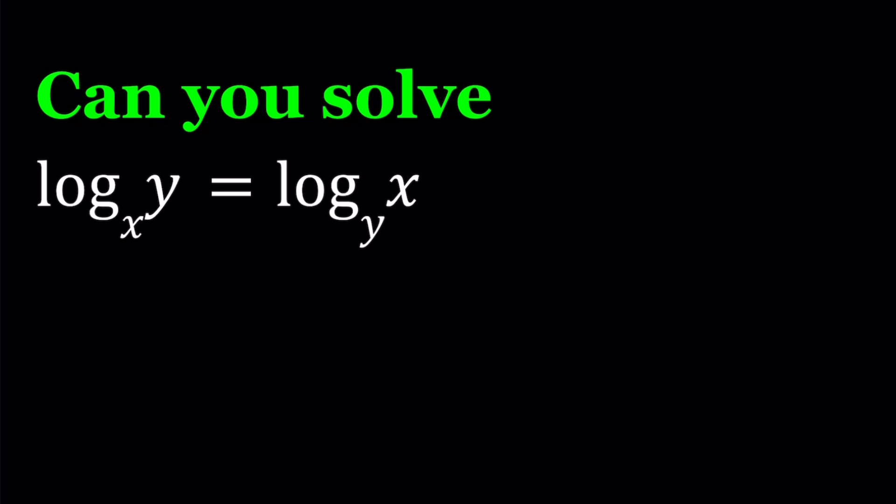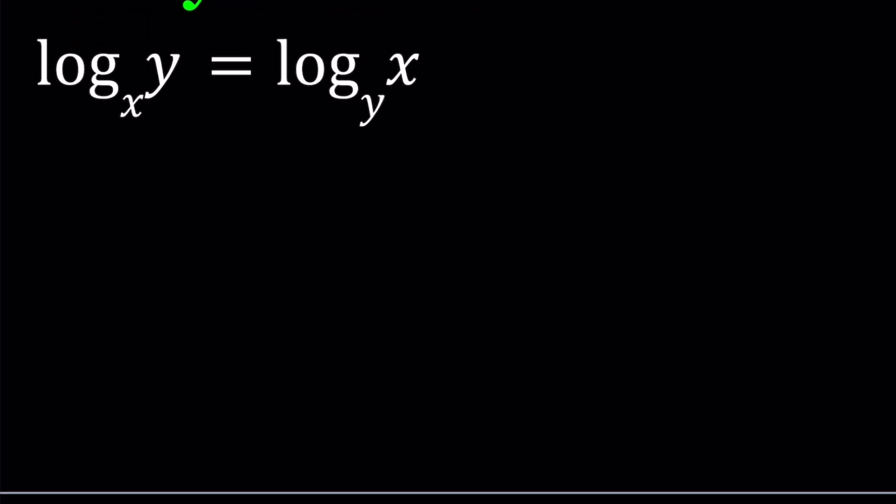First of all, we can use change of base formula. The change of base formula works like this: if you have log_b(a), you can write it as log(a) / log(b). You can use pretty much any base here. It could be base 10, which we don't write, or the natural logarithm, which you can write as ln(a) / ln(b).